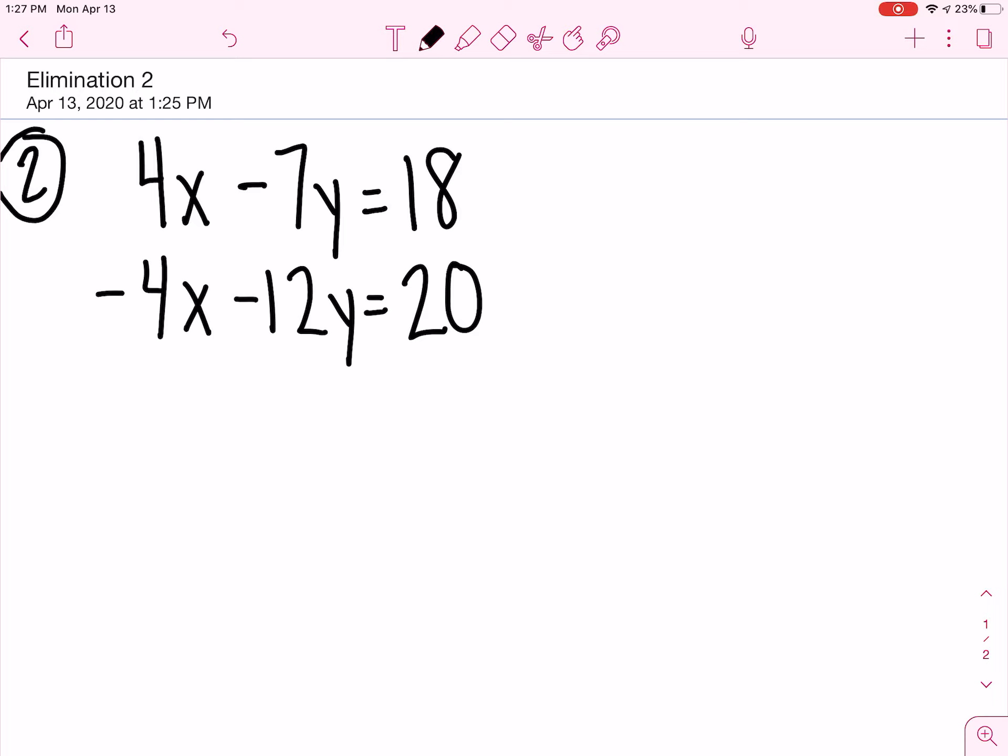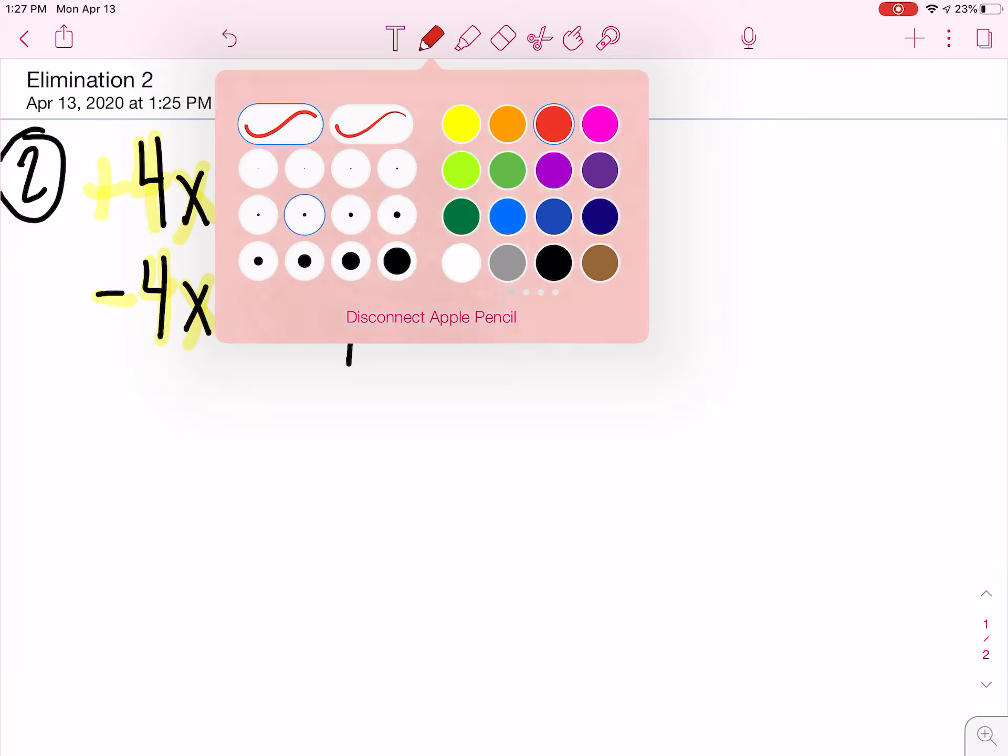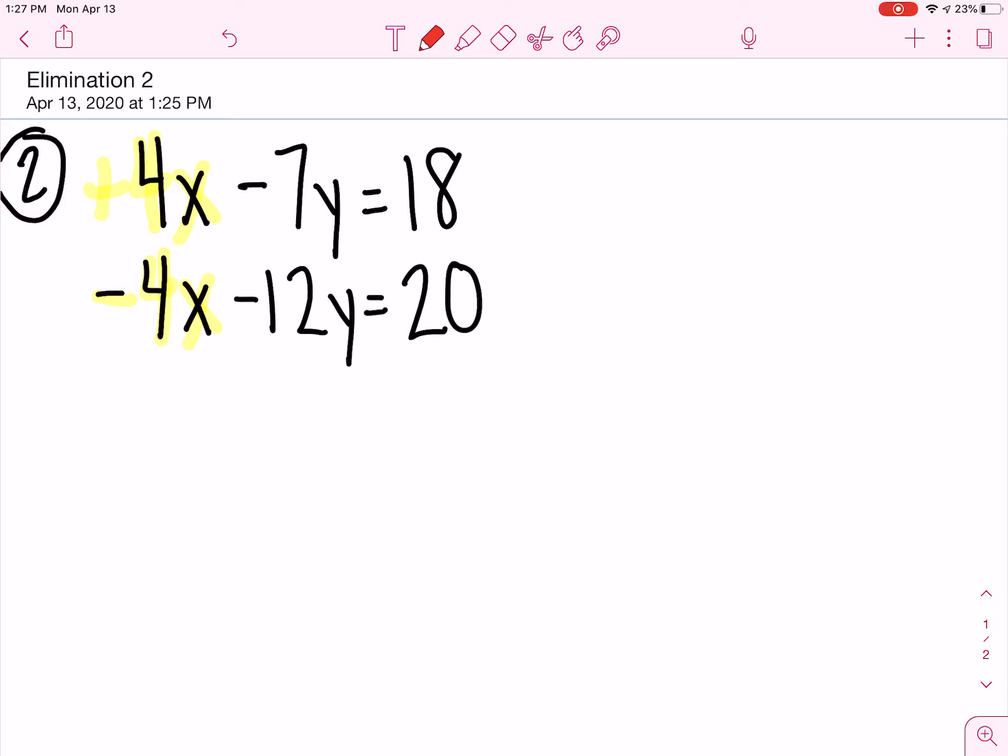X's and Y's are on top. Then I'm going to look, do I have a pair of opposites? I have a positive 4X and a minus 4X, so I do have a pair of opposites, so I won't have to do that extra step. So the first thing here in red, my work will be I'm going to add these two equations together.